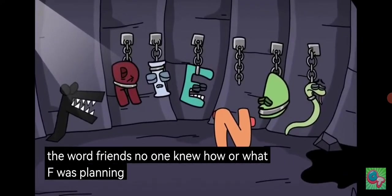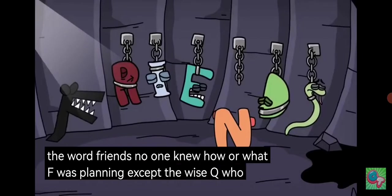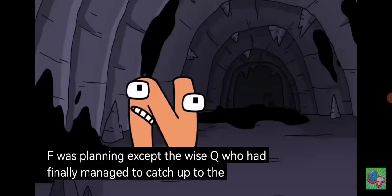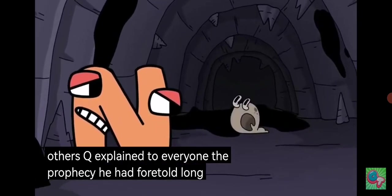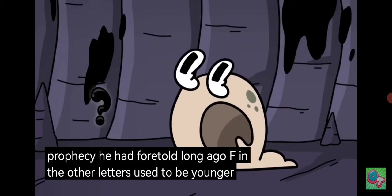No one knew how or what F was planning, except the wise Q, who had finally managed to catch up to the others. Q explained to everyone the prophecy he had foretold long ago. F and the other letters used to be younger, so young in fact that they were all lowercase.